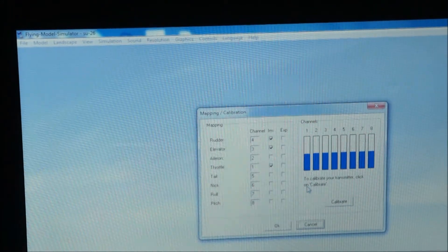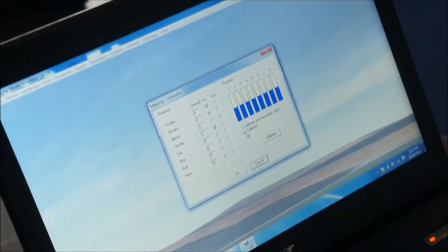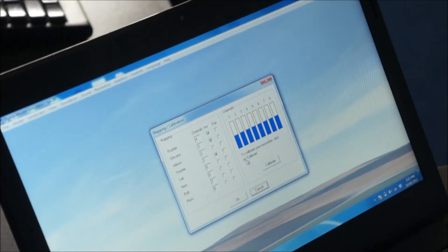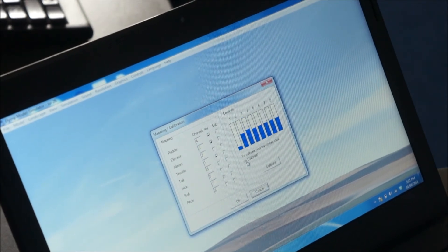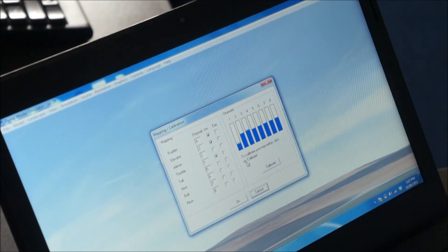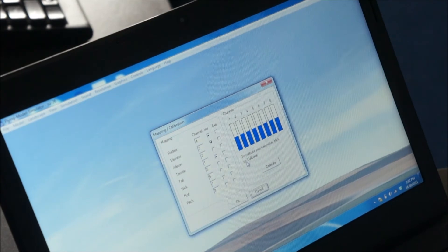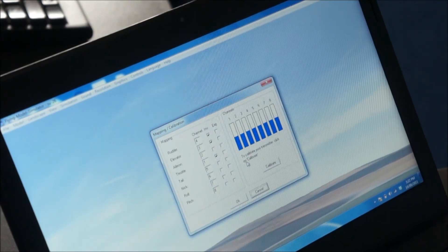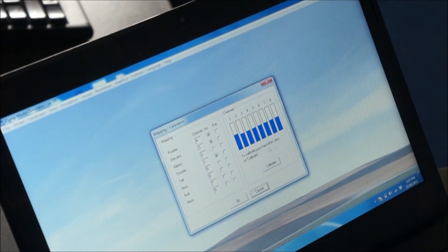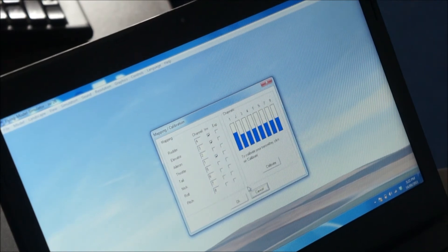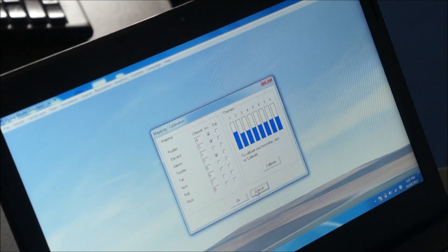And if we just jiggle the controls around, you'll see those first four channels moving up and down. And that's for the DX5e. If you use the DX6i, it's going to be slightly different. We just need to calibrate them and go through the prompts. So we'll go okay to that.